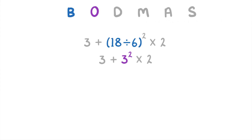The next thing on our list is the order or index, which is this power of 2. This means we have to do 3 times by itself — so 3 times 3 — which equals 9. So we now have 3 plus 9 times 2.